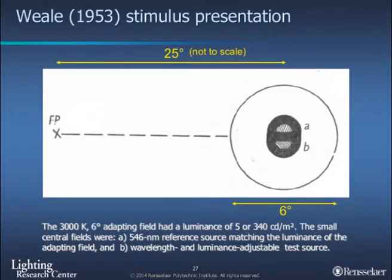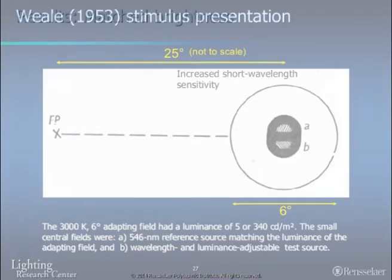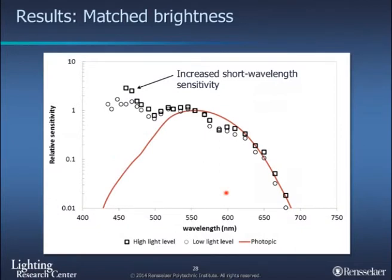We've selected two examples from the literature. Weill, back in 1953, had subjects fixate with a 3000K adapting field and a 546 nanometer reference source, then change a comparison until they appeared equally bright. The results confirm, as hypothesized and demonstrated back in the 50s, increased brightness for short wavelength radiation beyond V-Lambda — shown here on a log scale. You'll notice slight differences for short wavelengths at high and low light levels, but no differences on the longer wavelength side. Billy Wooten in 1975, with colleagues, did a similar but more exotic experiment: fixation on a 3000K adapting field, measuring an increment threshold — how many radiant watts it takes to just detect a one-degree spot on a bright 17,000 candelas per meter squared background.